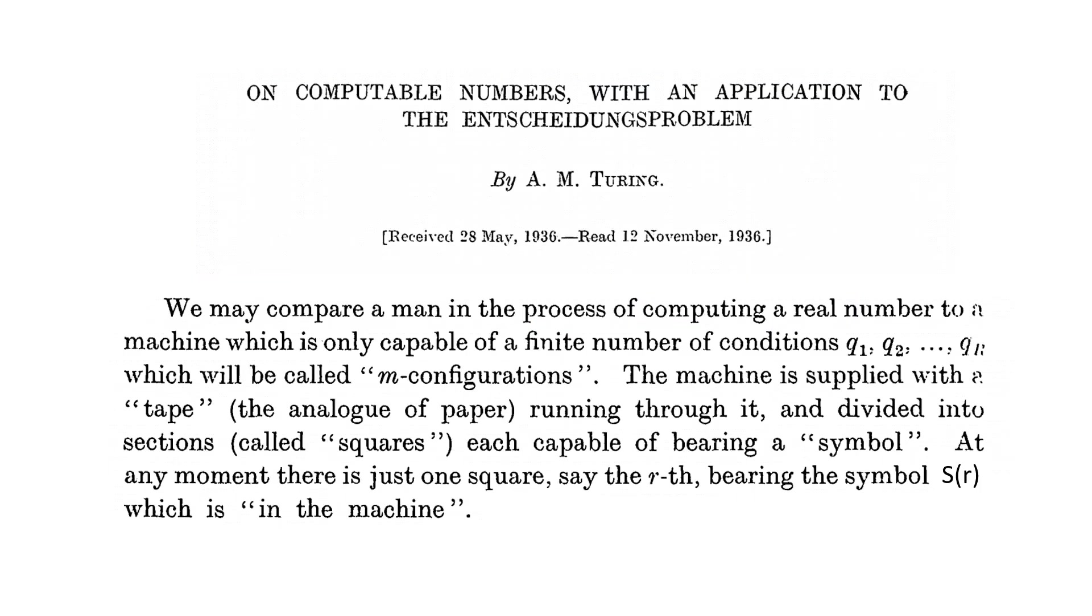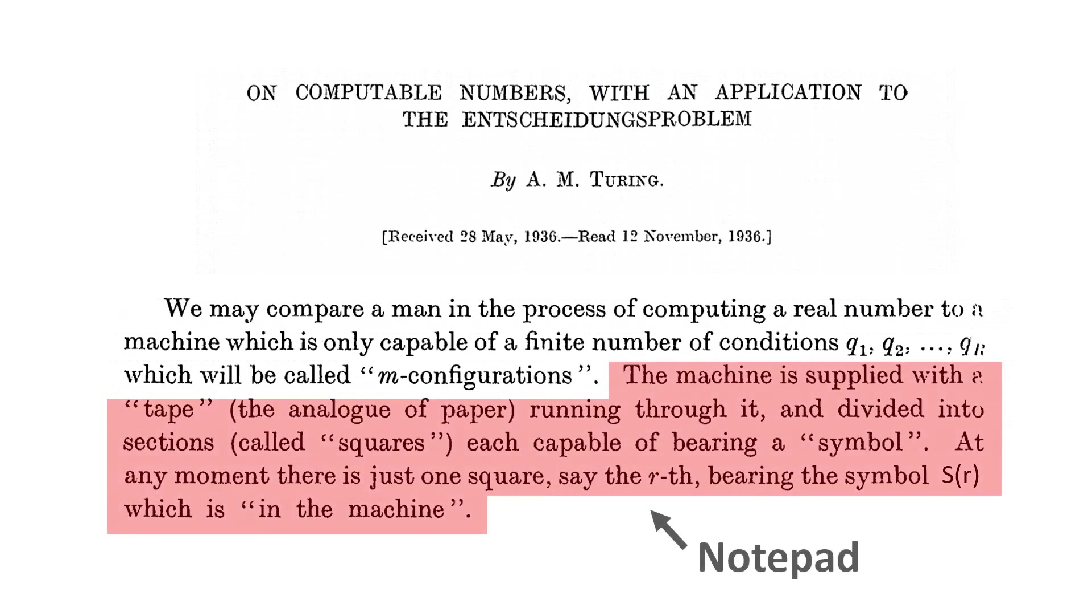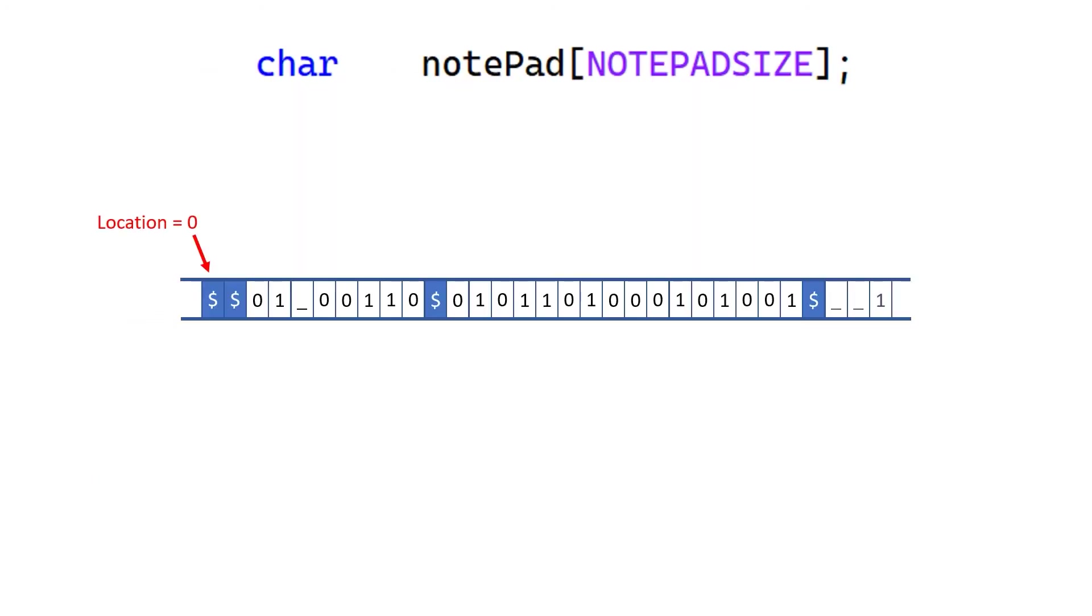I may use the terms tape and notepad interchangeably here, but Turing in his paper referred to it as a tape. To the right of the double dollars, I'm going to leave space for eight symbols, and I'm going to have these represent my status register. This is just really setting aside some space on the notepad for where I want to store the status register. It's up to me to make sure I use it properly.